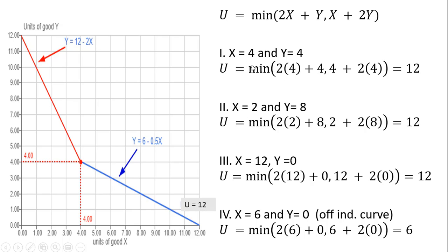Let's verify some consumption bundles. Starting at the intersection, if x equals 4 and y equals 4, plugging into the utility function: the minimum of (2 times 4 plus 4) or 12, and (4 plus 2 times 4) or 12 — so the minimum of 12 and 12 is 12. Indeed, at this kink point, utility is 12.